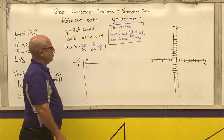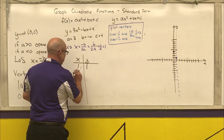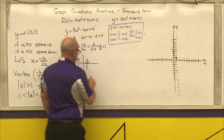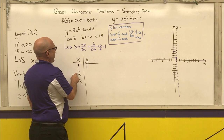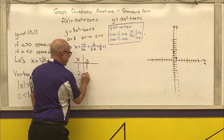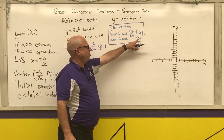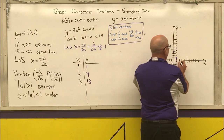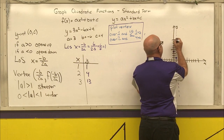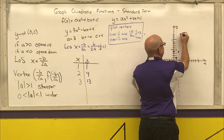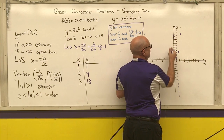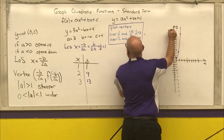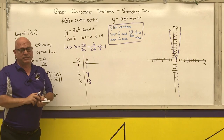From the vertex, go over 1 and up a (which is 3), so 1 + 3 = 4 — that gives the point (2, 4). Go over 2 and up 4a: 4 × 3 = 12, so 1 + 12 = 13 — that gives the point (3, 13). By symmetry on the left: (0, 4) and (−1, 13). That is the graph of y = 3x² − 6x + 4.